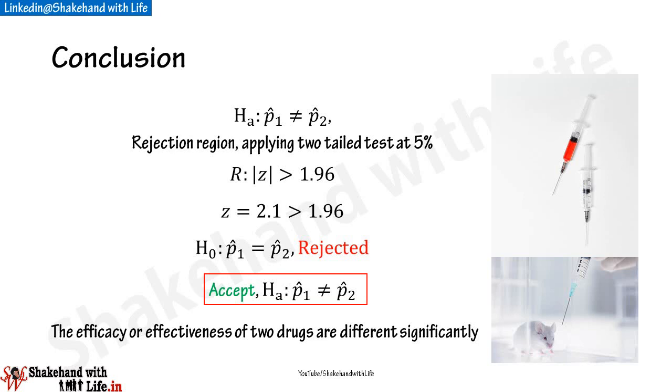We conclude that the efficacy or effectiveness of the two drugs is significantly different. For more on how to define the rejection region for a two-tail test, see the linked video — the link is in the eye mark above and in the description below. If you have any questions or suggestions, write your feedback in the comment box below. Hit the like button, share this video, and subscribe to Shake Hand with Life for more videos. Visit shakehandwithlife.in to download course notes and ebooks. See you soon in my next video.